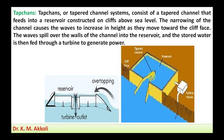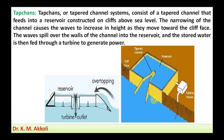The narrowing of the channel causes the water level to rise inside as waves move towards the cliff space. The waves spill over the walls of the channels into the reservoir, allowing water to be collected there. The stored water is then fed to a turbine, through which electricity can be generated. This is how tapered channels are used for wave power generation.